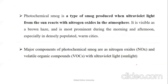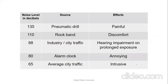Photochemical smog is produced when ultraviolet light from the sun reacts with nitrogen oxides. It is visible as a brown haze and is prominent during morning and afternoon, especially in densely populated and warm cities. Major components are nitrogen oxides, volatile organic compounds (VOCs), and ultraviolet sunlight.